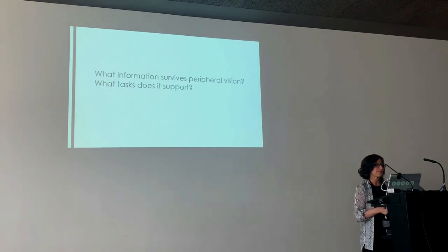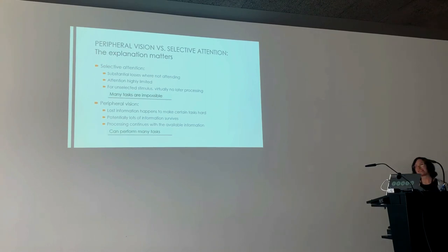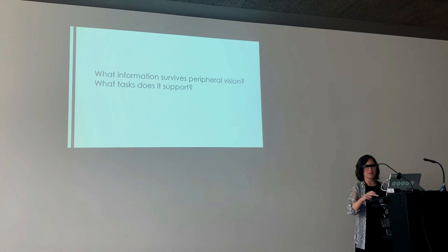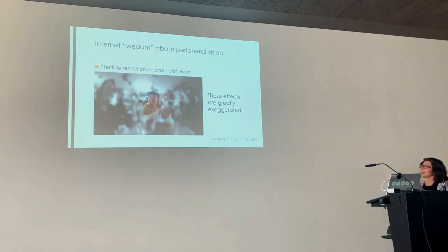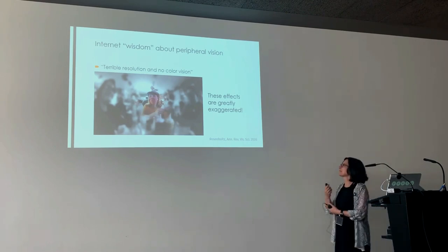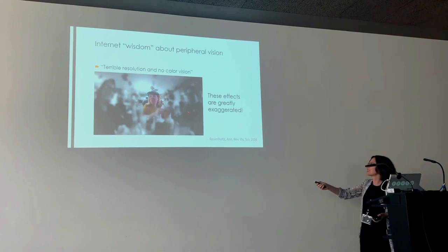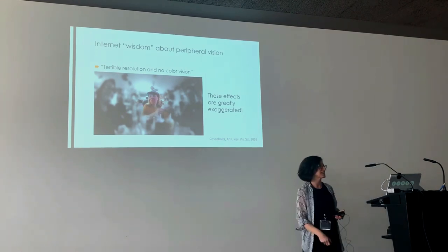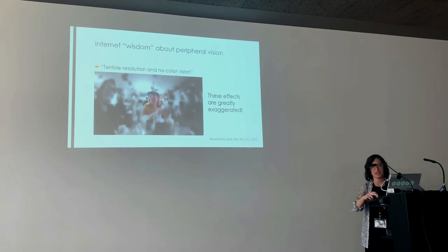What information does survive peripheral vision, and what tasks can you do with it? To understand that, we need to better understand peripheral vision, and I want to start by debunking a few myths. On the internet, you tend to find: 'peripheral vision has terrible resolution and no color vision,' with images showing color only in a tiny foveal range and things being very blurry everywhere else. There's some truth to this, but these effects, especially with those kinds of images, are greatly exaggerated.